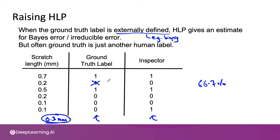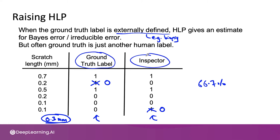So we should change that label to zero. Then 0.5 mm gets labeled one, 0.2 mm gets zero, and 0.1 mm should also be zero. If we go through this exercise of getting the ground truth labeler and the inspector to agree, we actually raise human level performance from 66.7% to 100%, at least as measured on these six examples.